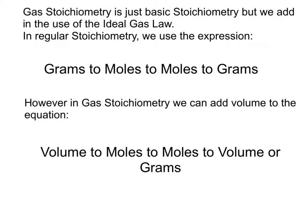Gas stoichiometry is just basic stoichiometry, but we add in the use of the ideal gas law. In regular stoichiometry, we use the expression grams to moles, moles to moles, moles to grams. However, in gas stoichiometry, we can add volume to the equation. We can take volume, turn it into moles, then use our balanced chemical equation to go moles to moles, and then we can go back to volume or grams, depending on what the question asks us.